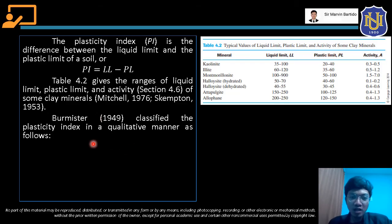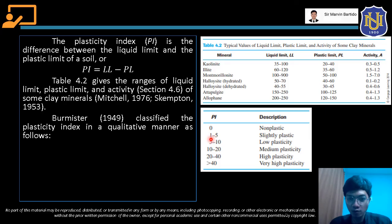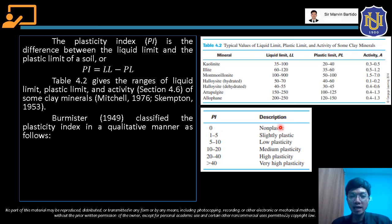Burmester classified the plasticity index in a qualitative manner as follows. Para sa PI na value na zero, yung description nung soil ay non-plastic. Kapag 1 to 5 yung plasticity index, yung soil ay slightly plastic. 5 to 10 is low plasticity, 10 to 20 is medium plasticity, 20 to 40 is high plasticity. Kapag greater than 40, very high plasticity na yung soil natin. So that's how we interpret yung plasticity index natin.